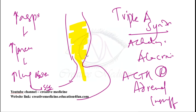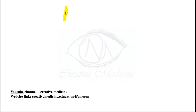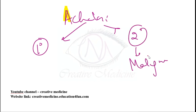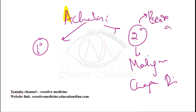Achalasia can be primary (idiopathic) or secondary. Secondary achalasia is due to malignancy or Chagas disease and is called pseudo-achalasia.